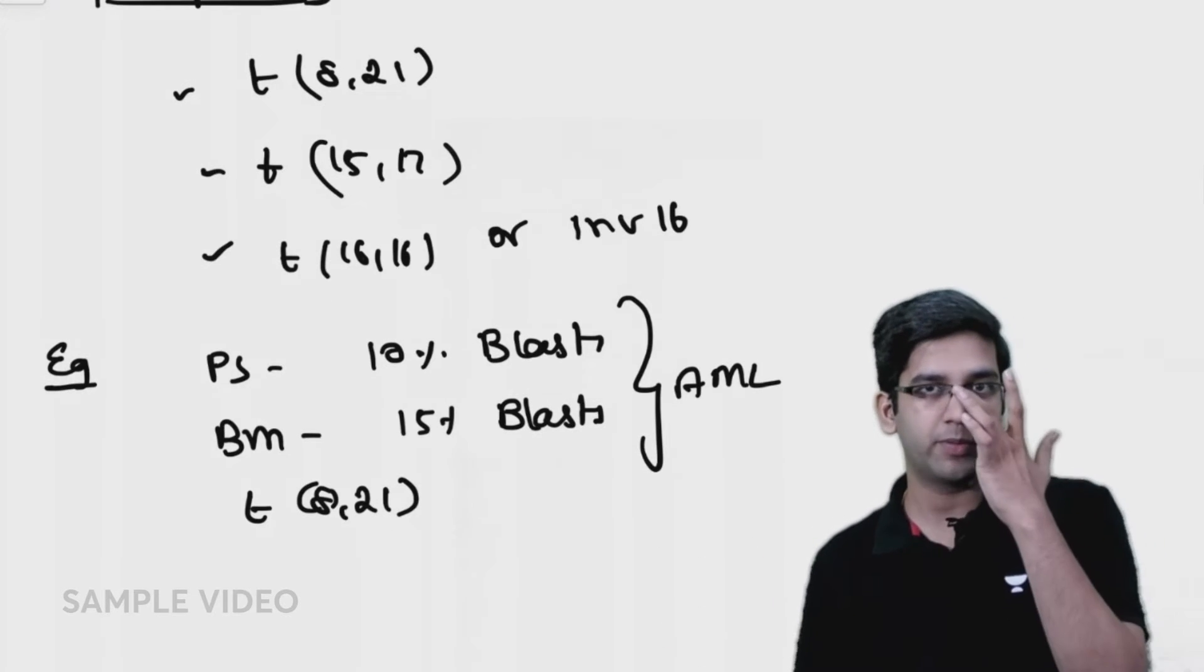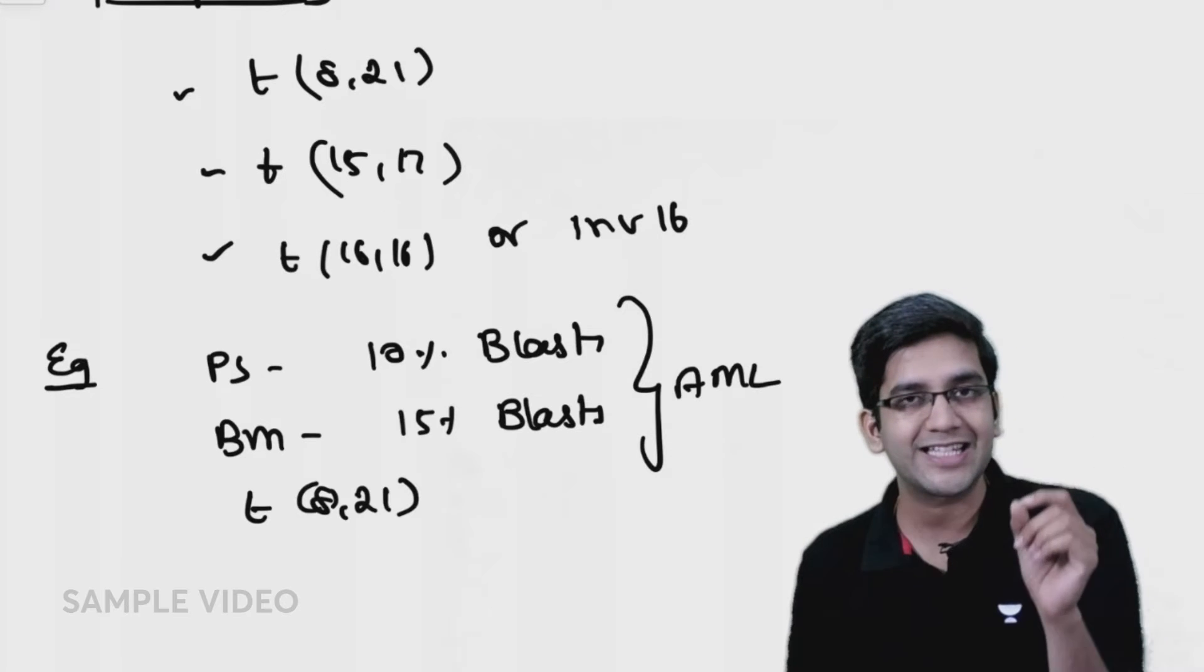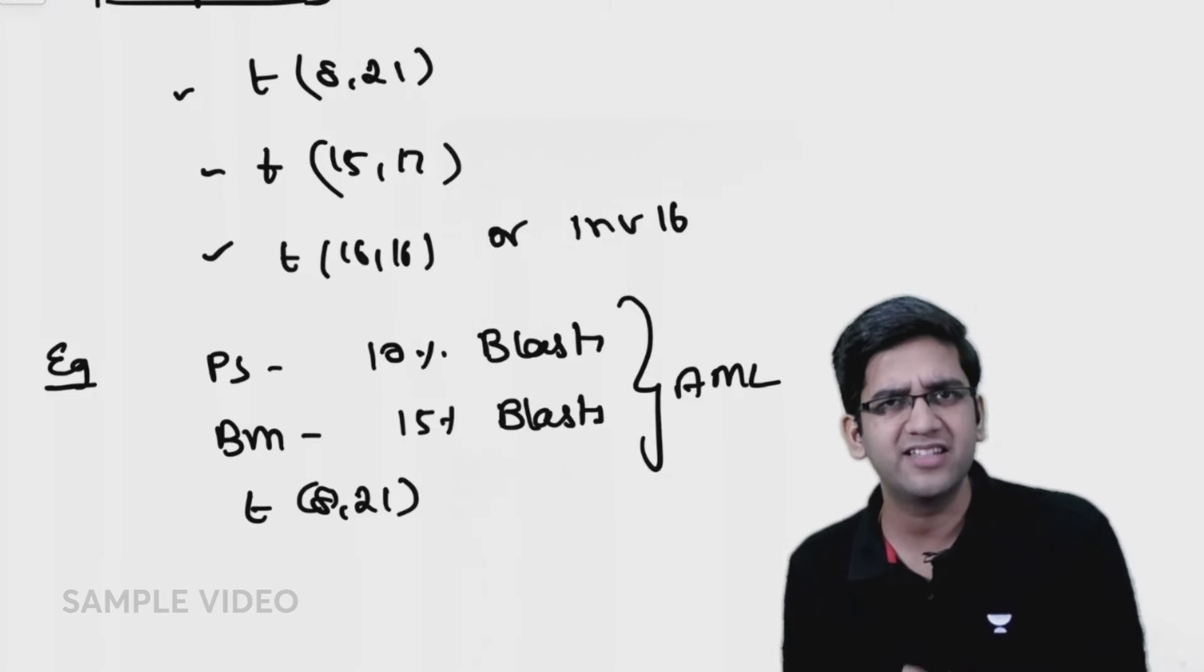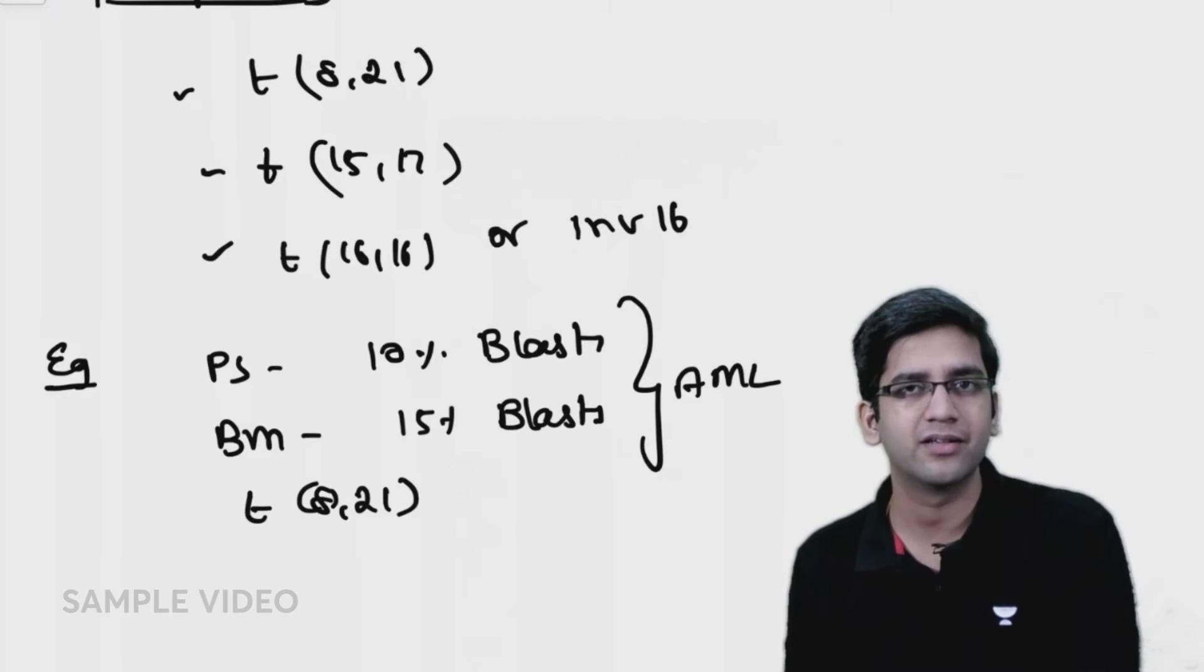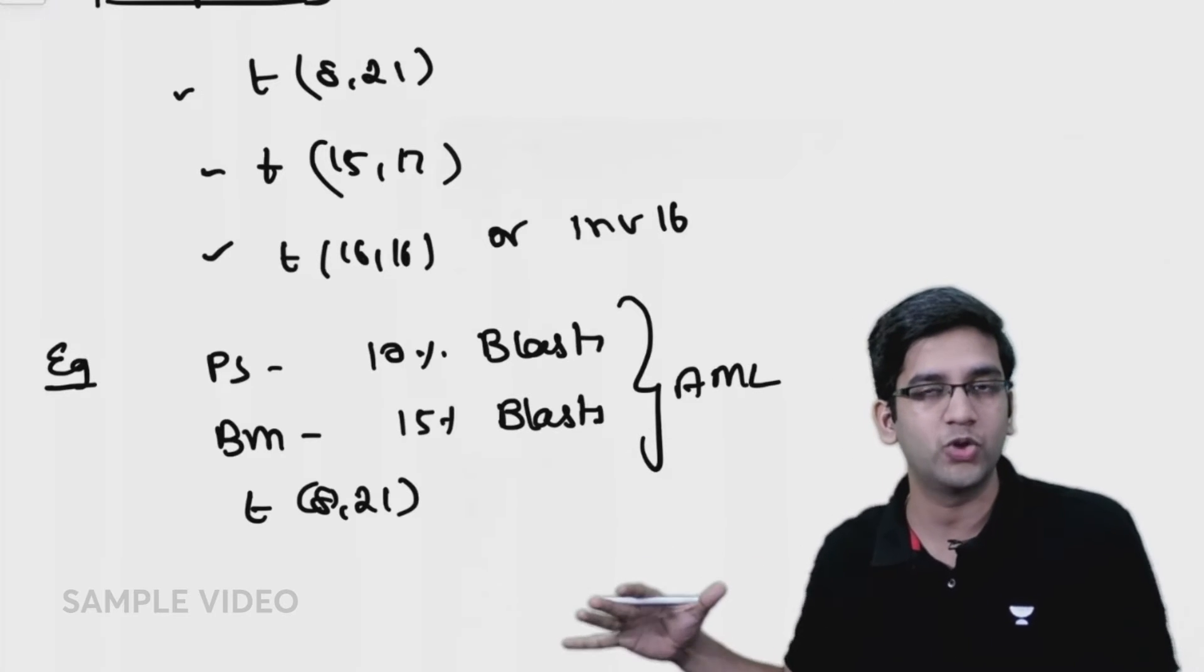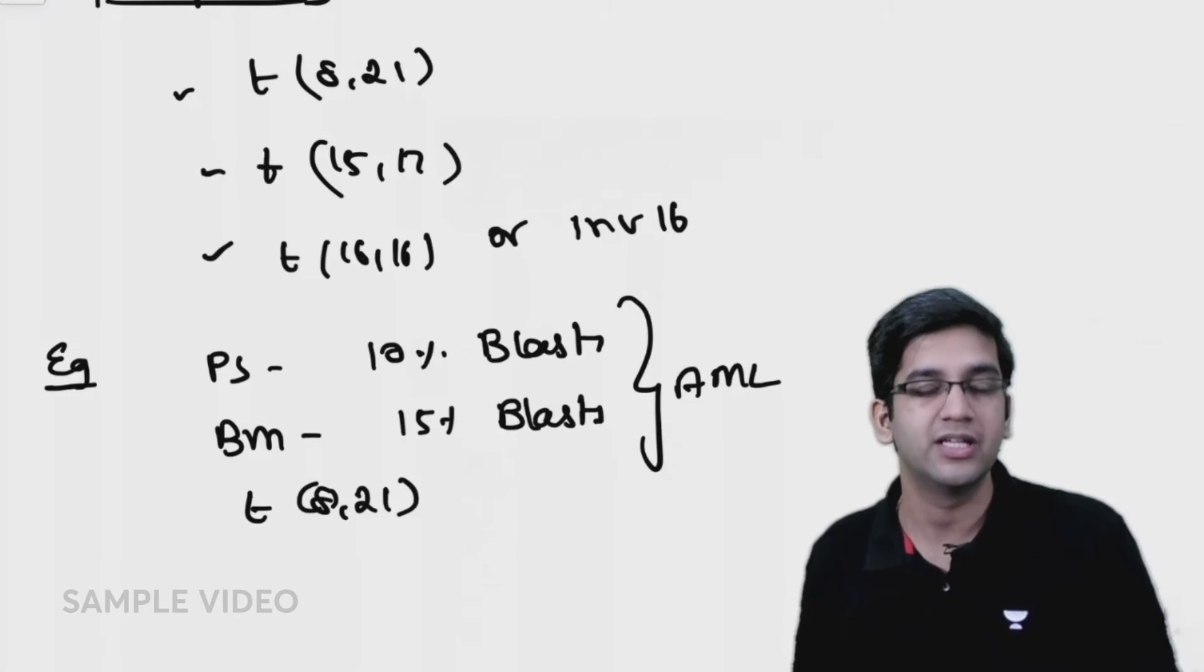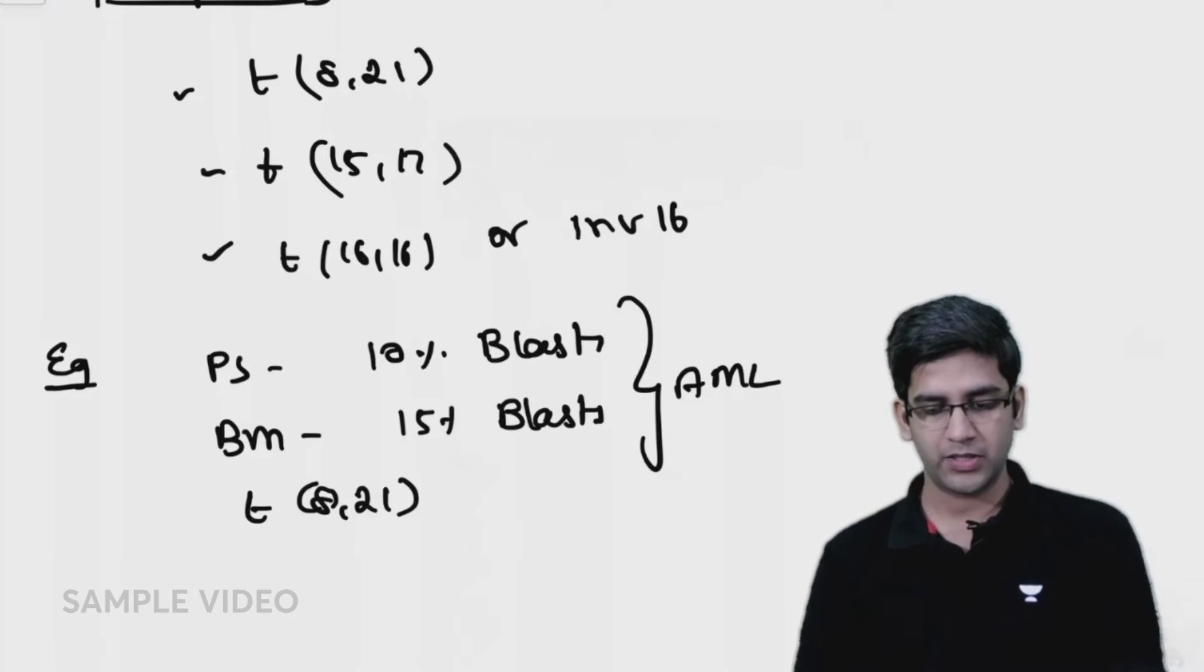Now can I call it an AML? Yes, I can call it an AML. When I have a classical translocation - any one of these three - I don't need 20% blasts. Ten is enough, nine is enough, eight is enough - anything is enough provided I have blasts and a classical translocation. That's why exceptions are important.